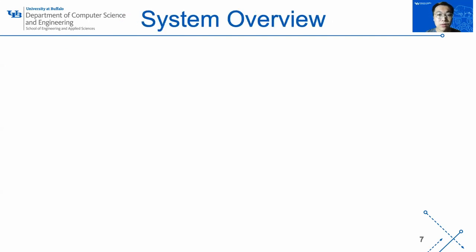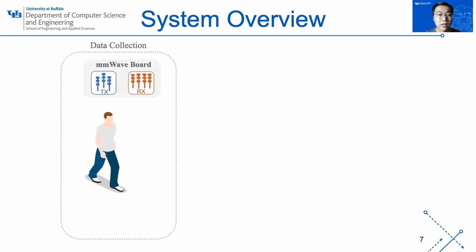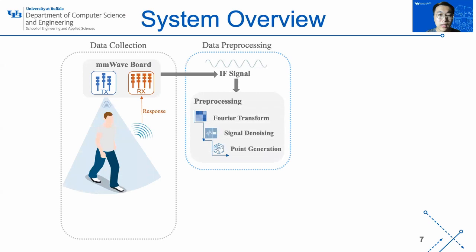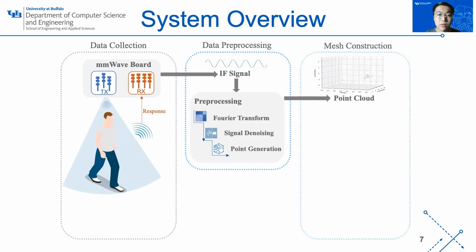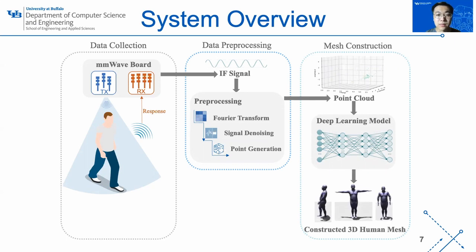Next, let's have an overview of the proposed mmMesh. During the data collection process, the commercial mmWave radar emits FMCW signals and captures the reflective signals. Then the radar hardware can mix the received signals with the transmitted signals to obtain RF signals. Then we conduct multiple pre-processing steps, and we can obtain the point cloud from the mmWave radar. The next step is to construct the 3D human mesh. By fitting the point cloud in each frame into our DIP model, we can output a realistic dynamic human mesh. Note that in our system, the whole inference procedure can be processed in real time with a latency of 0.3 seconds.